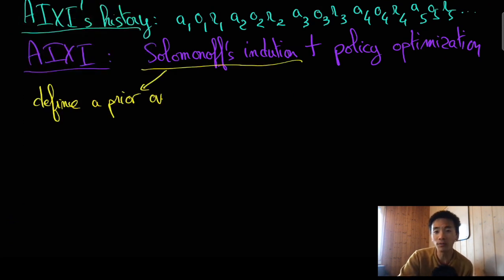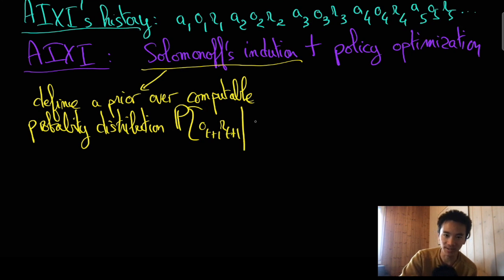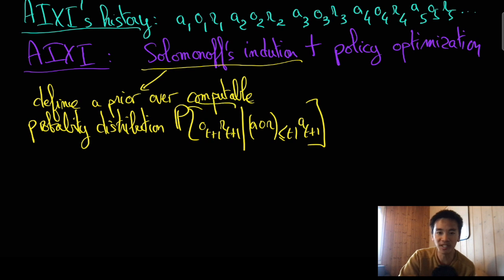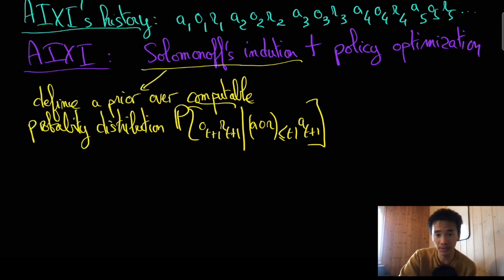consists of considering all computable probability distributions over the distributions of observations and rewards given past observations, rewards, and actions. And then Solomonoff's induction puts a prior a la Solomonoff on all such probability distributions. For each new observation and reward, Bayes' rule then allows to update the credences on the different probability distributions, and Solomonoff's completeness guarantees that the best possible predictions will be made quickly enough.